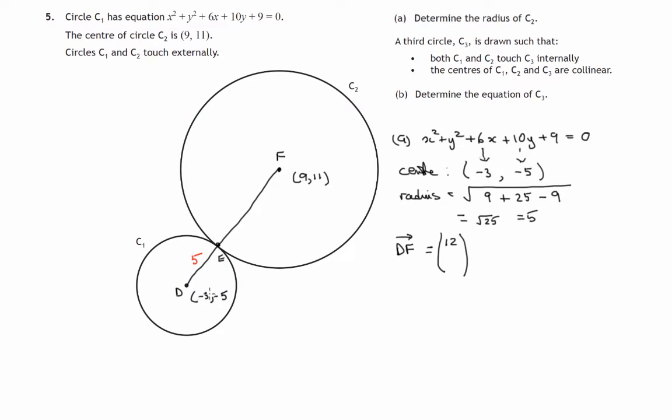It's 9 minus negative 3, gives us 12. And if we're at a height of negative 5 for the y coordinate, we've traveled up to a height of 11, that's a distance of 16. 11 minus negative 5 will give you 16. So the components traveling from d to f, we've gone 12 along, 16 up. So the distance from d to f would be the square root of 12 squared plus 16 squared. That's 144 plus 256, use your calculator for that. It's the square root of 400, that's 20.